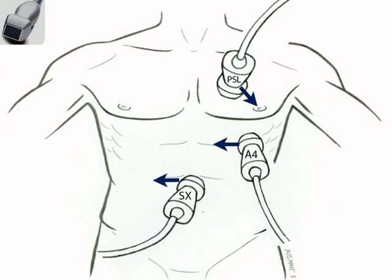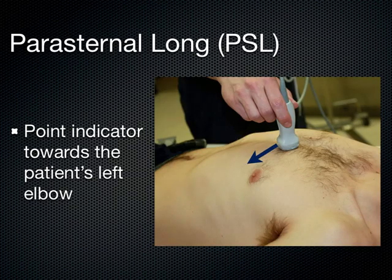In the parasternal long axis, we have the indicator pointing towards the patient's left hip or left elbow, and the probe is right against the sternum. For the apical 4 chamber and apical 5 chamber, we've got the indicator pointing to the patient's right, and this is all with the dot on the left-hand side of the screen, which is in the standard radiology configuration.